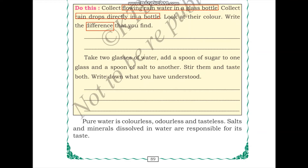In the next part of the exercise, take two glasses of water, add a spoon of sugar to one and a spoon of salt to the other, stir them, and taste both. The glass with sugar will taste sweet, and the glass with salt will taste salty. We can understand that water changes its taste based on what we add to it. Pure water does not have any sweet or salty taste.